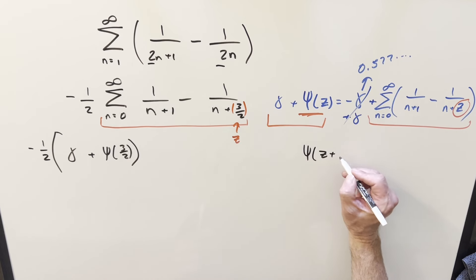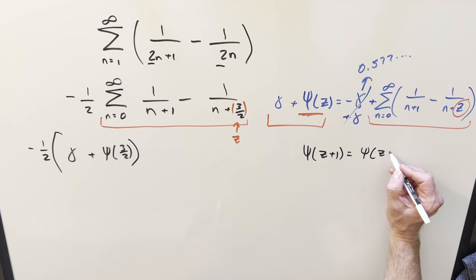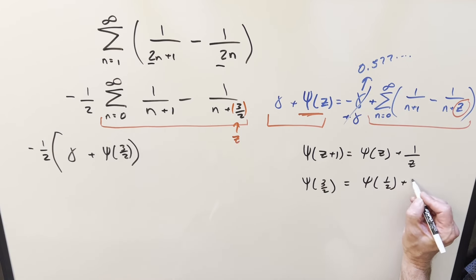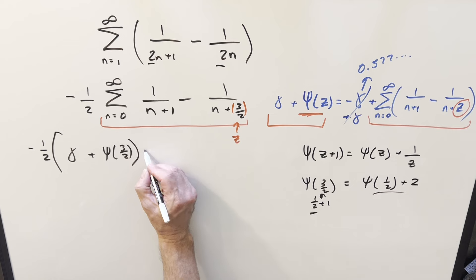So if we have something like digamma of z plus 1, we can reduce it by 1. So we get back digamma z plus 1 over z. So using this for digamma 3 halves, what's going to happen is we can just subtract one from it. We get digamma of 1 half plus 1 over the z value. And that's going to be 2.